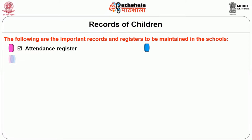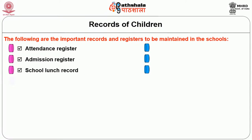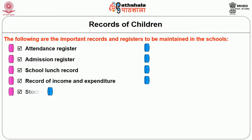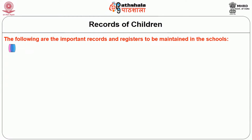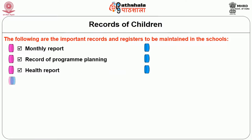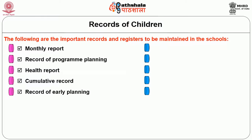The most important records and registers to be maintained in schools include: Attendance Register, Admission Register, School Lunch Record, Record of Income and Expenditure, Stock Register, Visitor's Record, Parent Education Program Record, Daily Record, Monthly Record, Record of Program Planning, Health Report, and Cumulative Record.